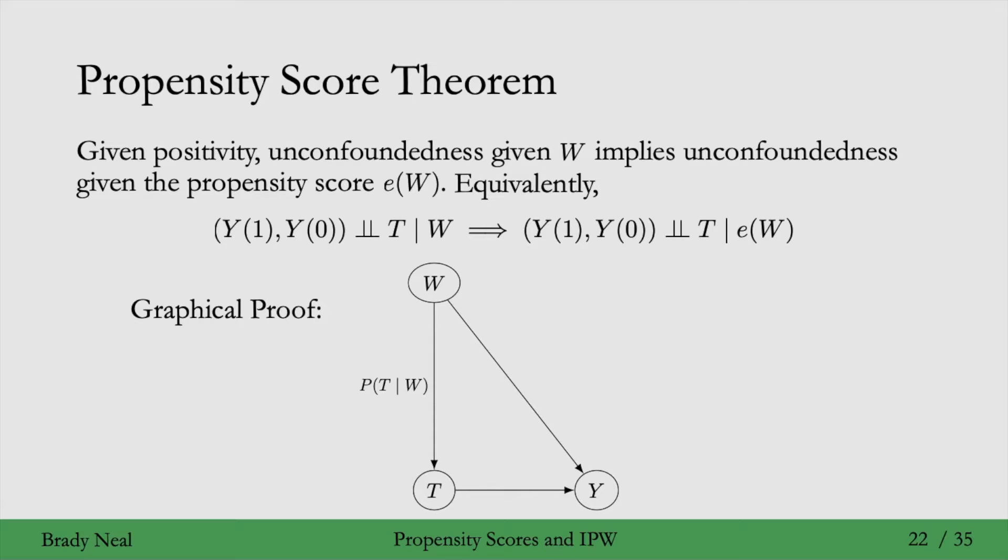we can completely describe this conditional distribution of T using just the probability of T equals 1 given W. To get the rest of the distribution, which is the probability that T equals 0 given W, just subtract this from 1. This is just the propensity score. So let's put that propensity score there in the graph. Now we have a node in the graph for the propensity score.